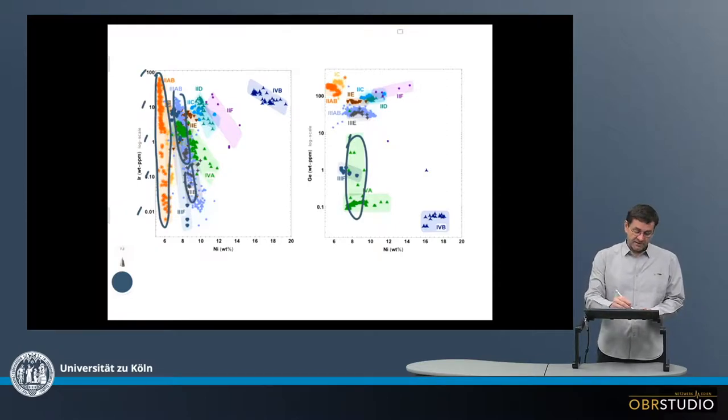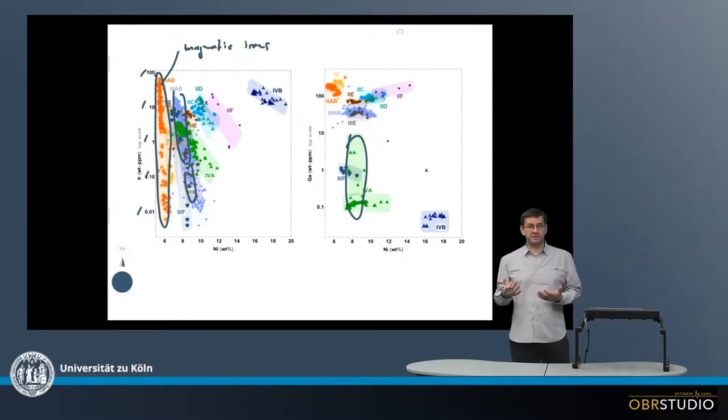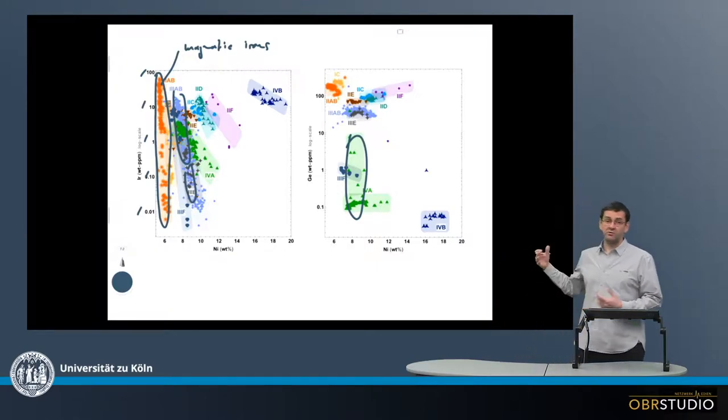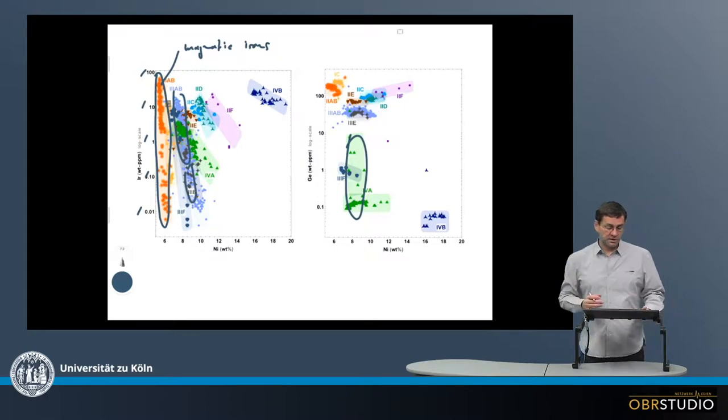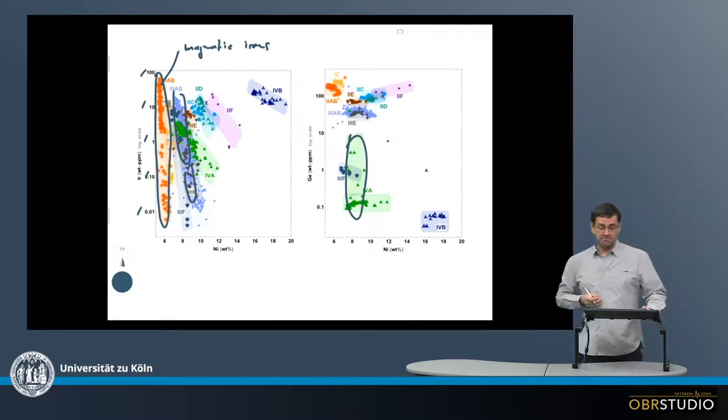Sometimes the iron meteorites with very large ranges, like the 2AB here, are called magmatic irons. And others with smaller ranges are called non-magmatic. This distinction doesn't make any sense because all of the iron meteorites initially were molten. But it is helpful to know that this distinction is sometimes made, although it has no genetic meaning.